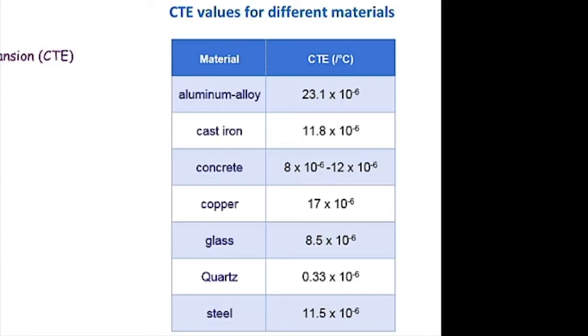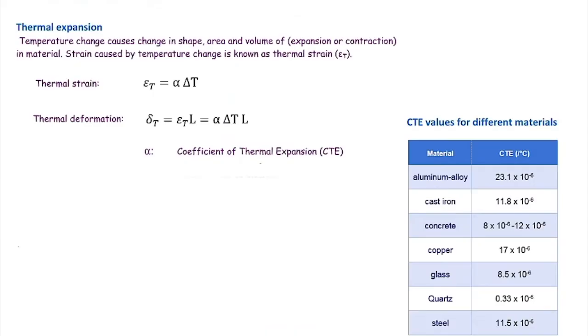So knowing how much is the thermal strain, we can determine how much is the thermal deformation. For thermal deformation, we use the same equation as we had in the past. We multiply strain by the length. Δ or deformation sub T, or deformation caused by temperature, is equal to strain multiplied by length. So εₜ multiplied by L, and that would give us the thermal deformation: α ΔT L.